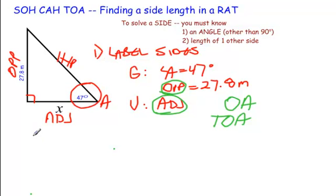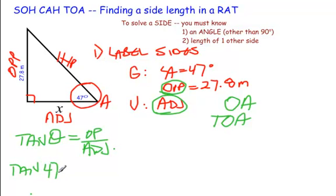The equation for the tan ratio is tan of the angle theta equals the opposite side divided by the adjacent side. We just substitute into our equation. The tan of 47 degrees is equal to 27.8 divided by X, our unknown.